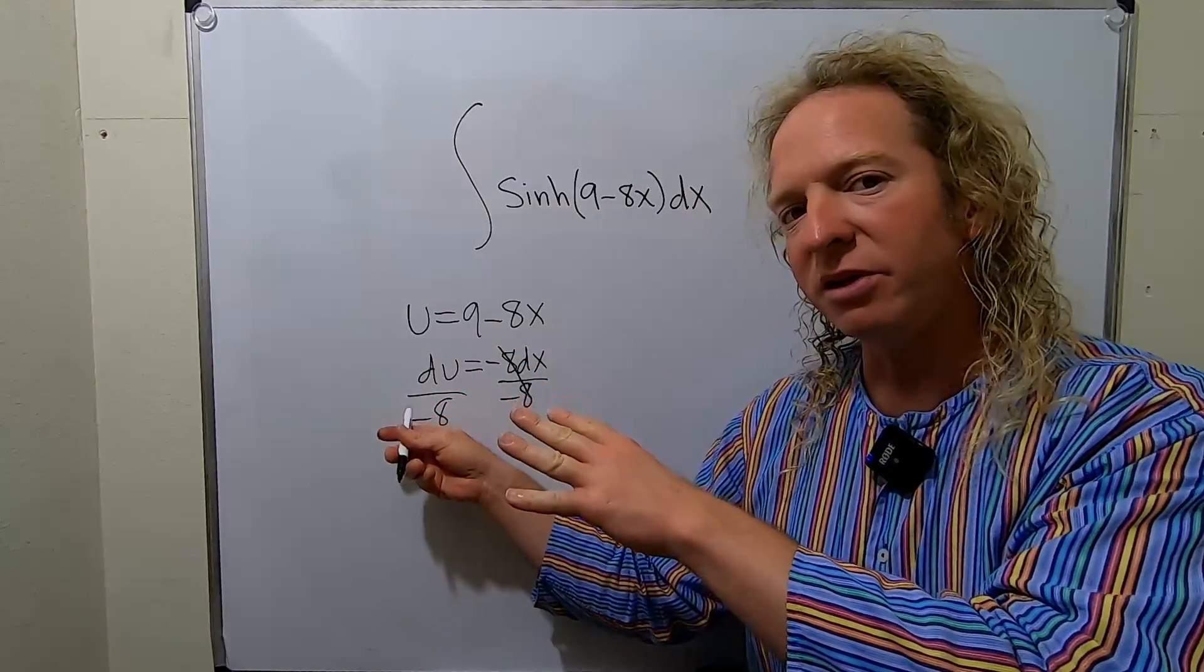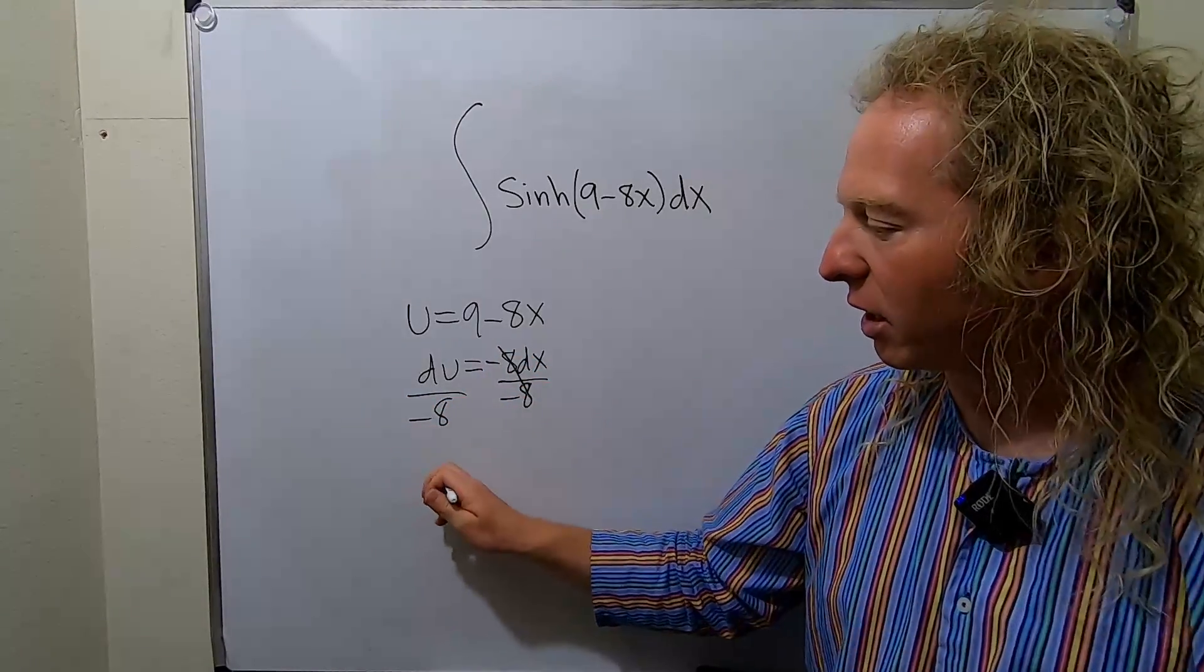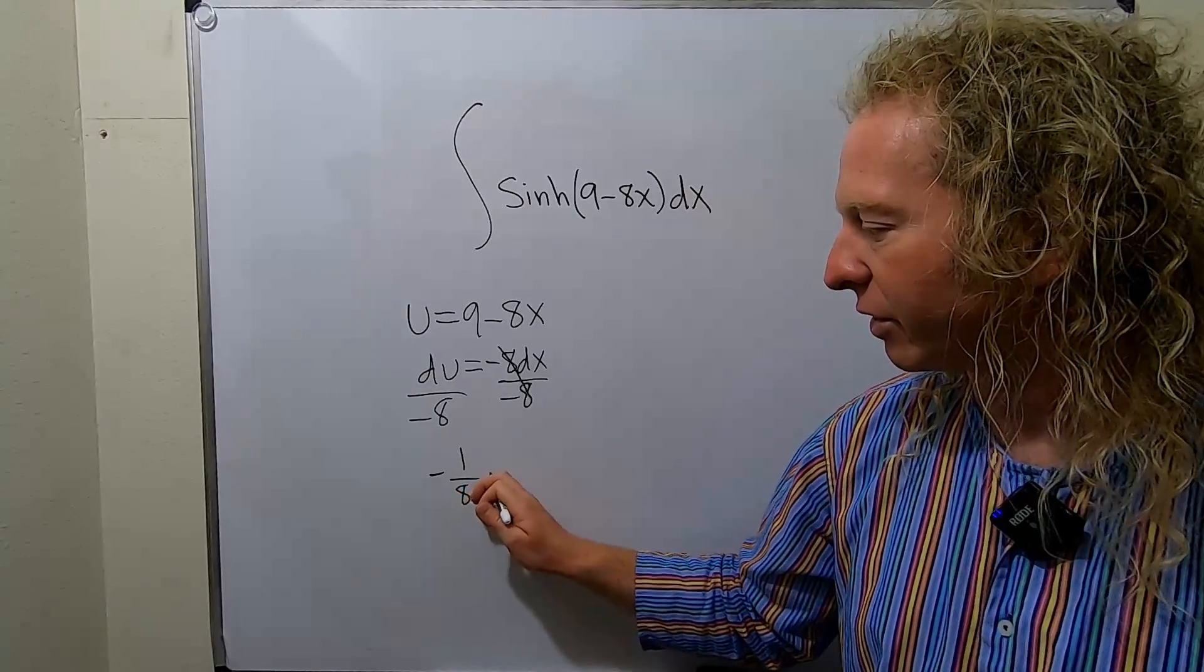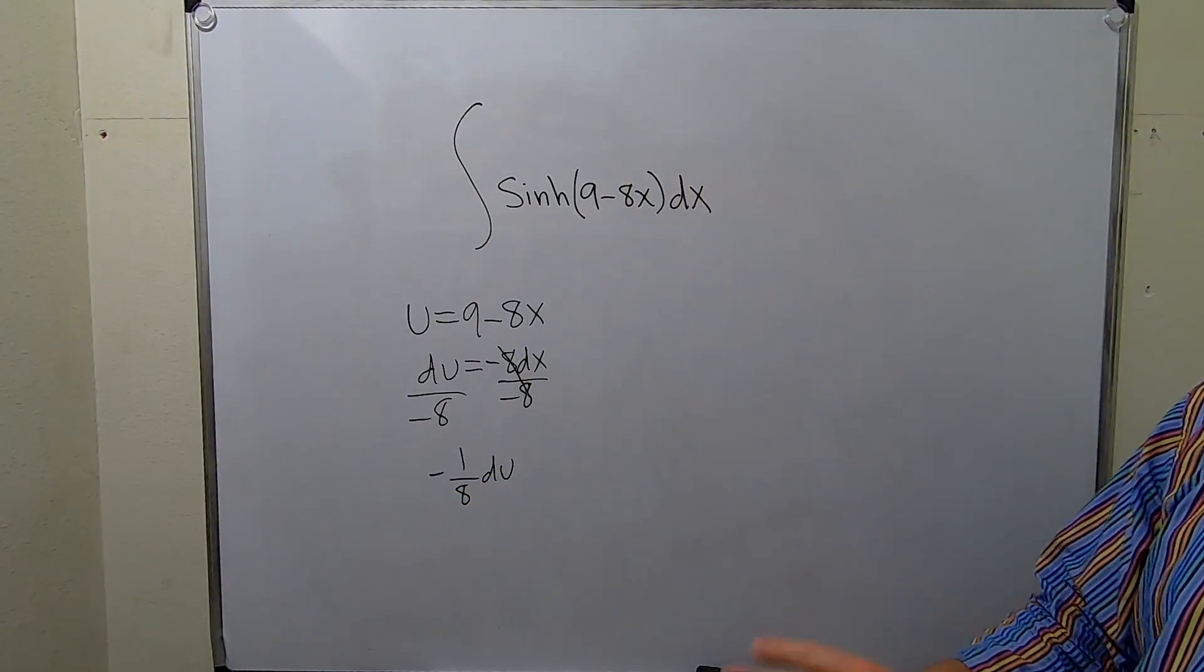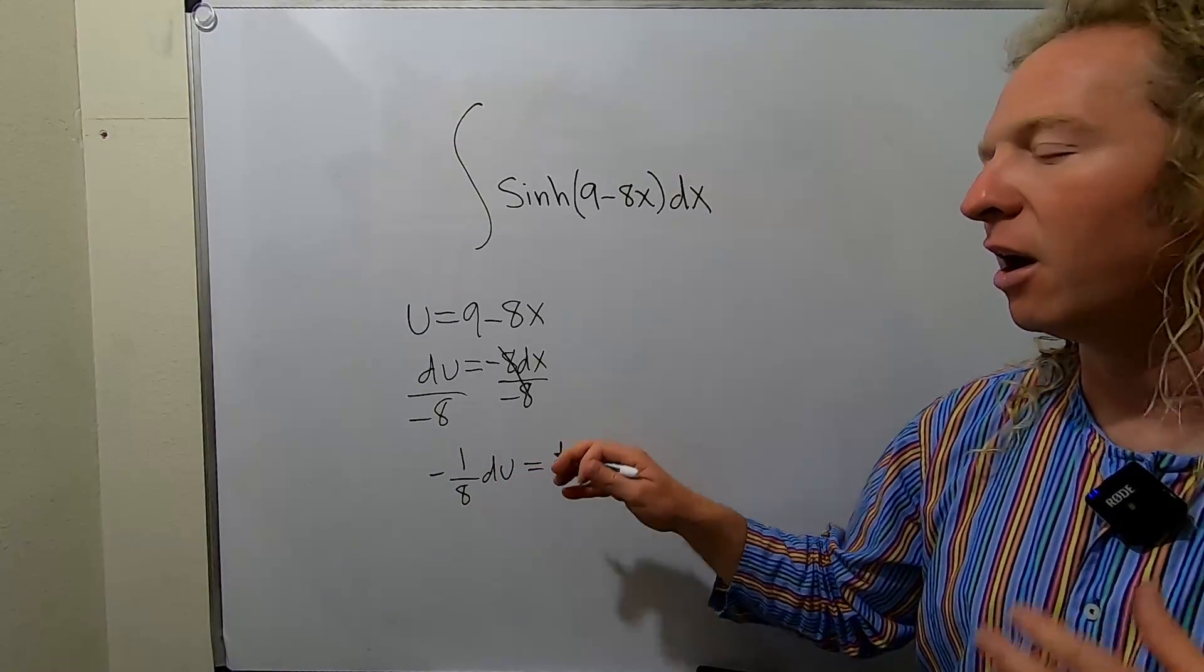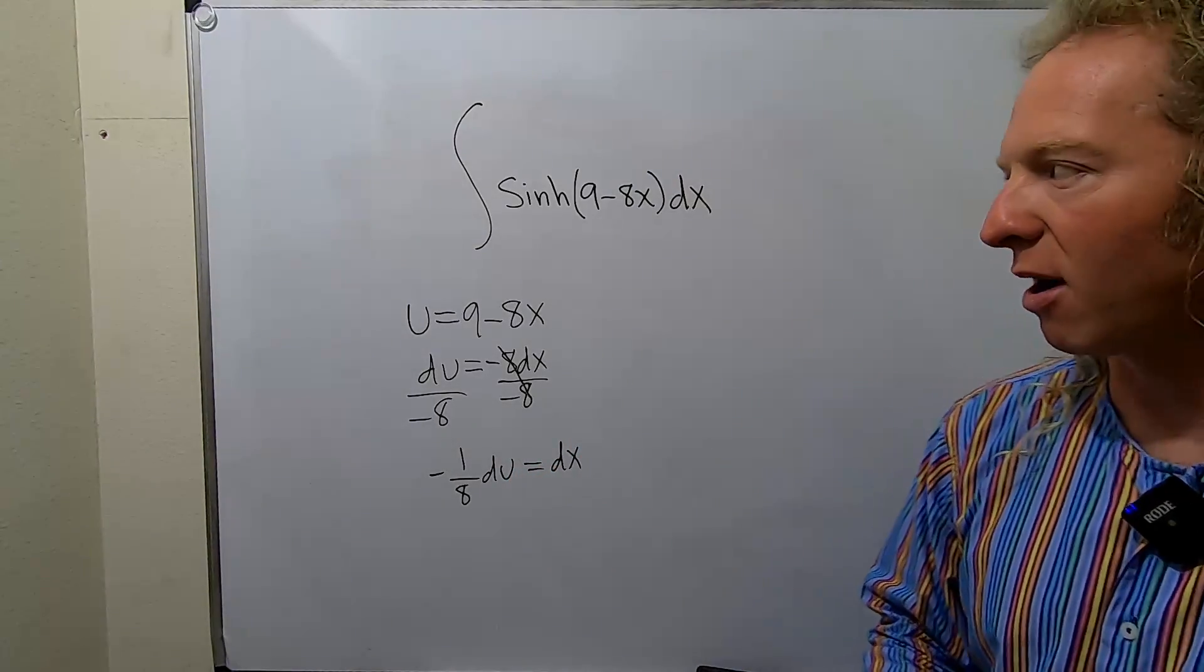Now instead of leaving it like this, I'm going to write it as negative 1 over 8 du. The reason we're doing that is because in the next step, we're going to pull out the constant. You have to have a little bit of foresight when you do these problems.